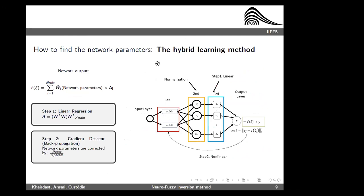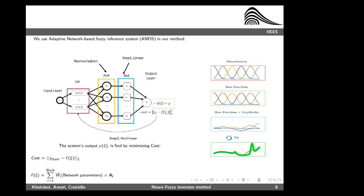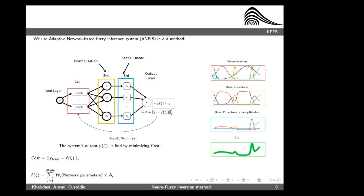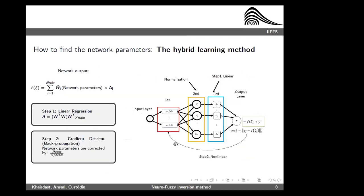The training procedure we use is the hybrid learning method — a two-step training procedure. At the first step, the weights of the basis functions are formed. At the second step, using a steepest descent method called backpropagation, we optimize the parameters of the Gaussian membership functions. After some training epochs, we arrive at a stationary point where the membership functions no longer change. This type of approximation is called adaptive approximation — it adapts to the target function.